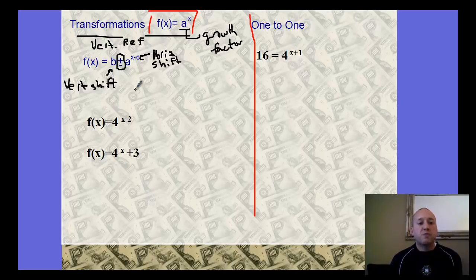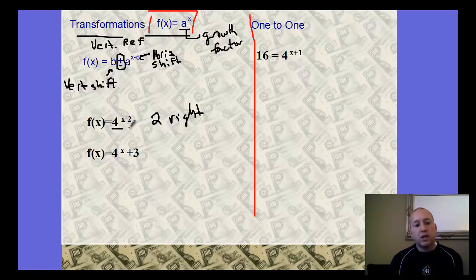In this first example, we have 4 as our base, so that's what we're growing by. We're actually having growth. It's x minus 2, so this is telling me I'm going to go 2 right. It takes the parent function and shifts it 2 right. This 4 value tells me my growth factor. I know I'm starting at that 4 value.